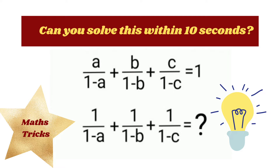What is the equation? A by (1 minus A) plus B by (1 minus B) plus C by (1 minus C) equals 1. Then what will be the value of 1 by (1 minus A) plus 1 by (1 minus B) plus 1 by (1 minus C)? So friends, let's watch the video and try, and comment to let us know what you get.